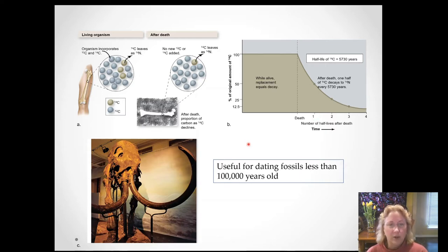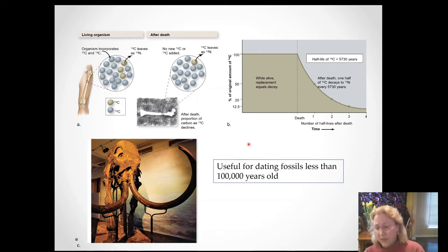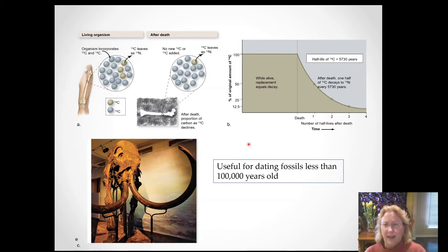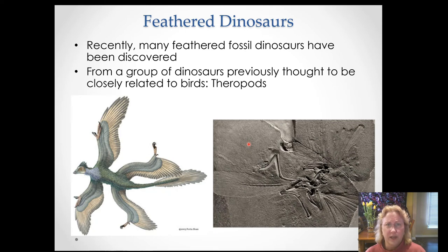Carbon-14 dating is useless for things that are very old, like dinosaur fossils. Dinosaurs went extinct 65 million years ago, so we have to use other isotopes for those. But carbon-14 is very useful for dating things that died less than 100,000 years ago, which covers all of human civilization and many other useful time periods.